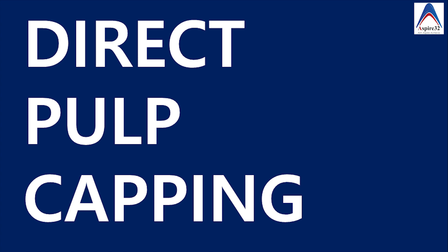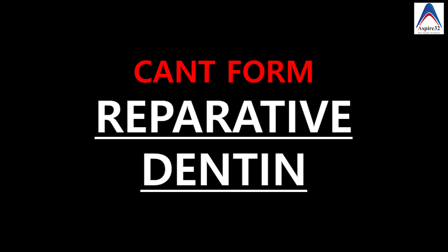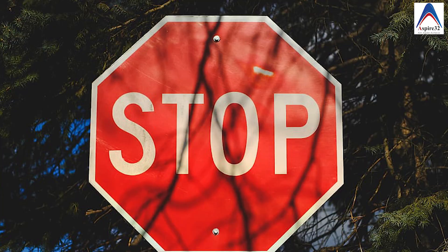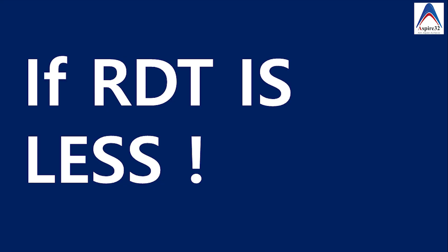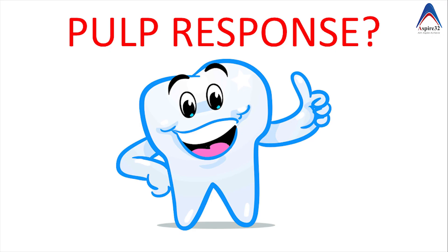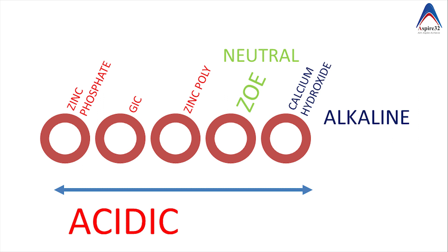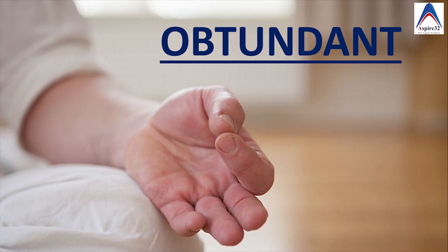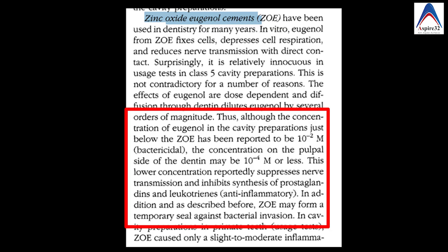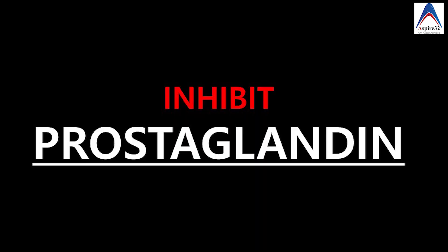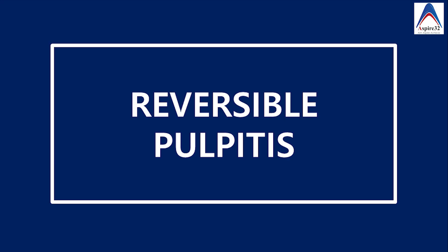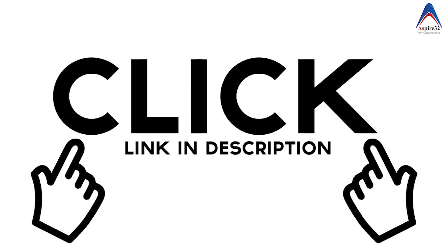ZOE was also initially used as a pulp capping agent in direct pulp capping, but since it doesn't stimulate reparative dentine formation, it was discontinued once calcium hydroxide became popular. In deeper cavities with limited remaining dentinal thickness, zinc oxide eugenol is beneficial for two reasons: its pH of 7 is neutral, making it far safer for the pulp compared to cements like glass ionomer, zinc phosphate, or zinc polycarboxylate which have lower pH. Second, its obtundent property — the slow release of low-concentration eugenol through dentinal tubules suppresses inflammatory mediators like prostaglandins, making it popular for treating reversible pulpitis.